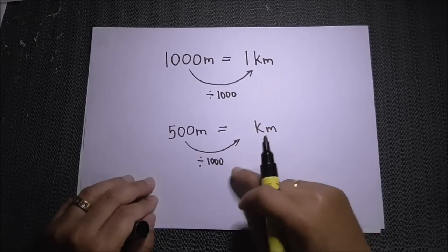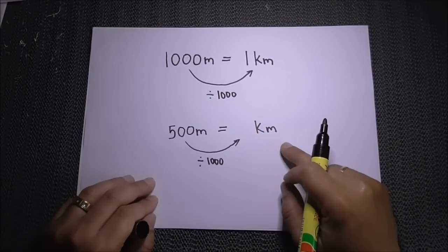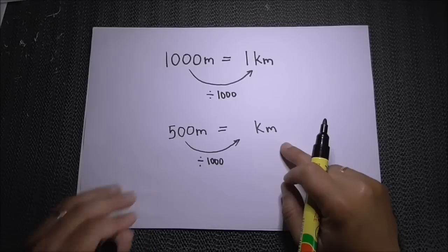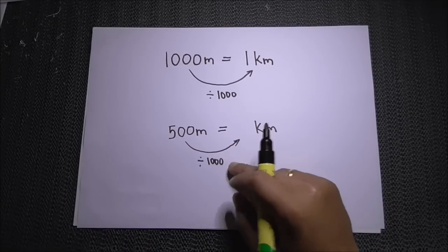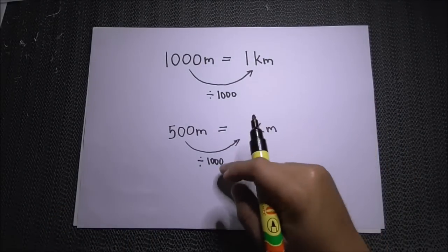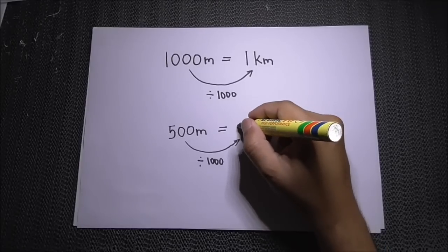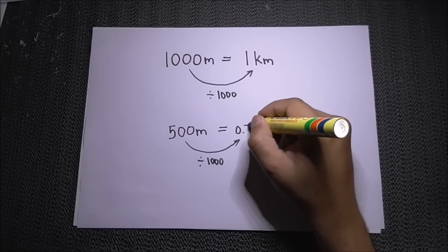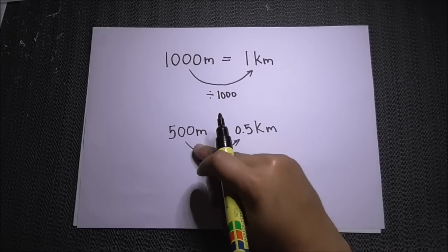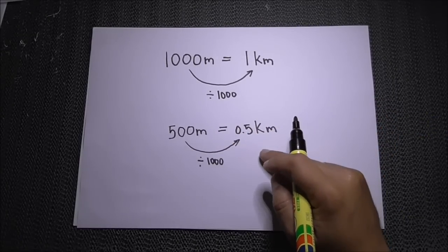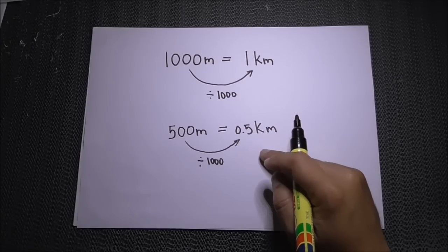With any given measurement in meters, you need to divide it by one thousand to get kilometers. When you divide 500 by one thousand, you get 0.5 kilometers. So 500 meters becomes 0.5 kilometers — and that's how you convert meters to kilometers.